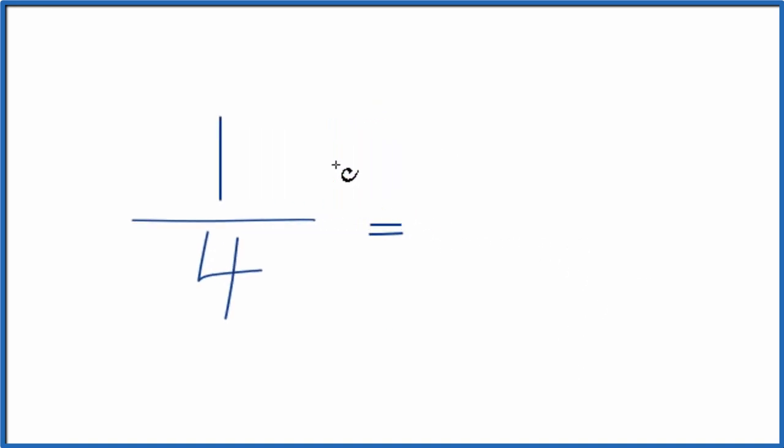So we could multiply the numerator and the denominator by two. One times two, that's two. Four times two is eight. So that's an equivalent ratio for one-fourth.